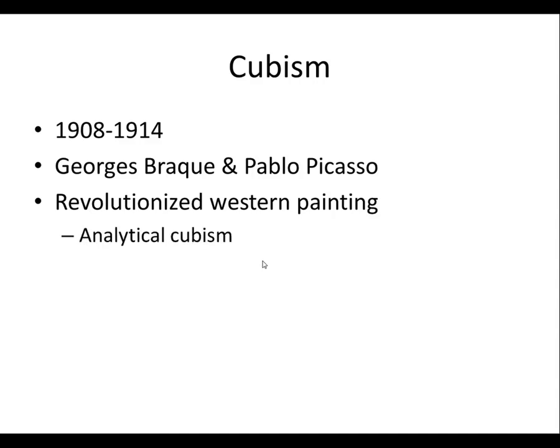There are actually two different types of cubism. Analytical cubism did away with all of those traditional things that people had come to expect — background, foreground — and began to focus on and explore the geometric qualities of objects. Then synthetic cubism took the ideas of analytic cubism and added color expressiveness and things like that.